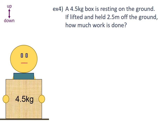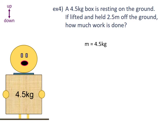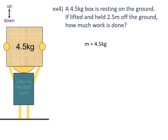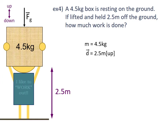Example 4: A 4.5 kilogram box is resting on the ground. Mass is 4.5 kilograms. If lifted and held 2.5 metres off the ground, how much work is done? The box is lifted 2.5 metres, so displacement is 2.5 metres up. We're doing work against the force of gravity.